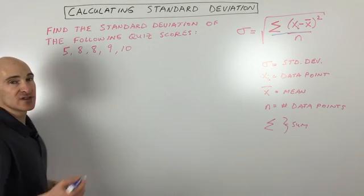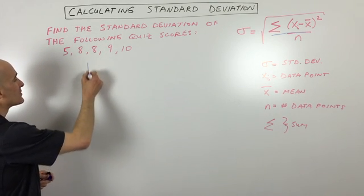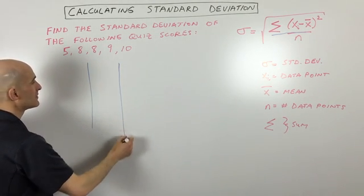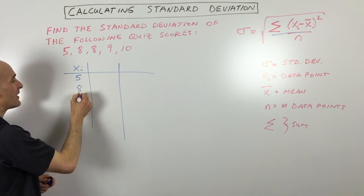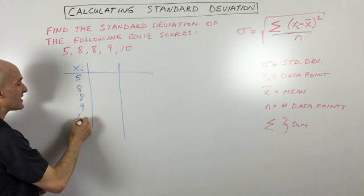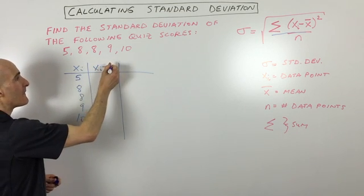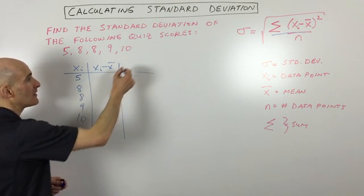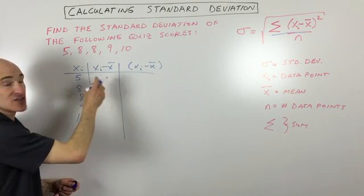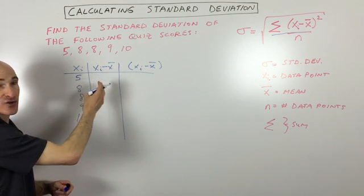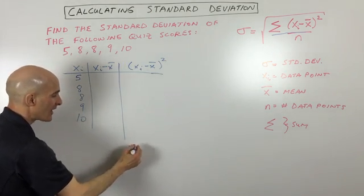So what I would do, this is how I normally do it, is I make a table. So here's our table. I'm going to list all the data points, which are 5, 8, 8, 9, and 10. And then we're going to take each data point minus the mean. And then what we're going to do is we're going to take each of those standard deviations—deviation means like how far off from the mean you are—and we're going to square them.